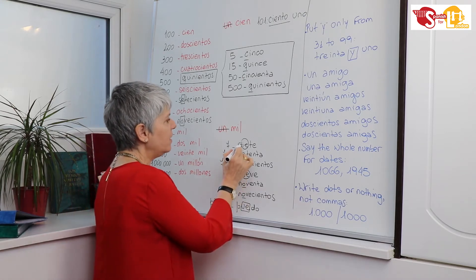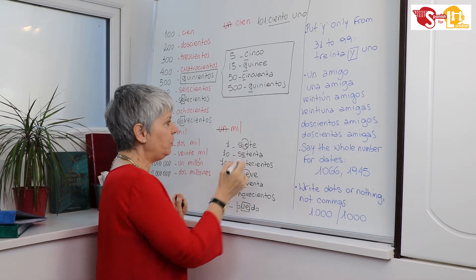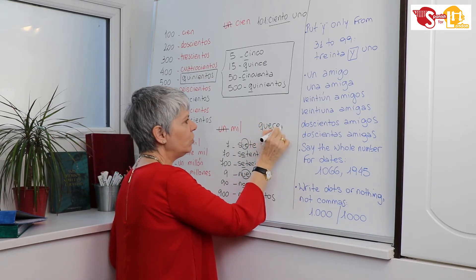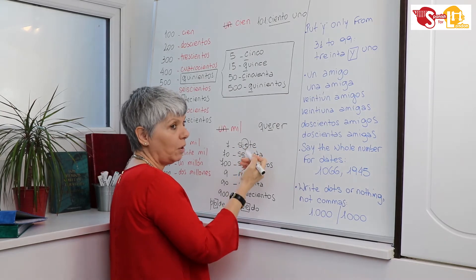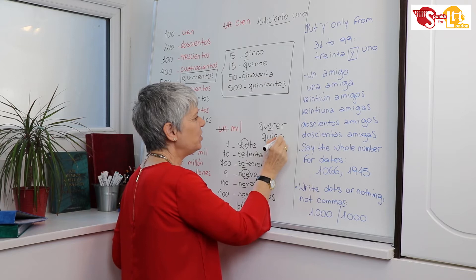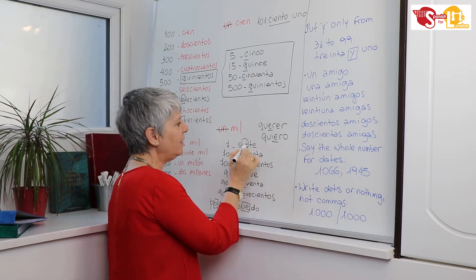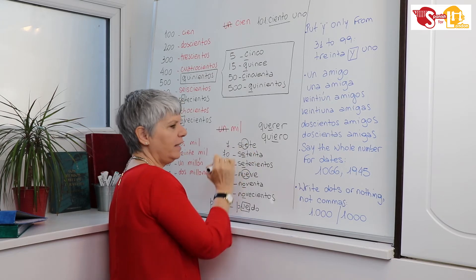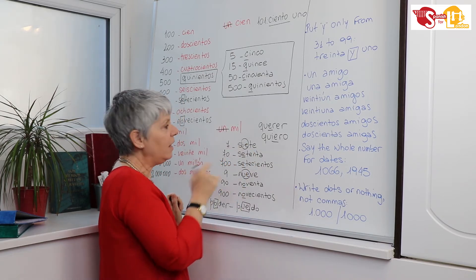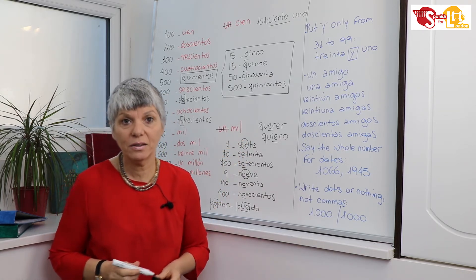Same happens with siete, setenta, setecientos. If you remember verbs like querer (to want) with the e. If I want to say I want, yo quiero, changing to ie. In the same way, siete with ie, but setenta, setecientos with e. For the same reason, for the position of the accent. Okay?